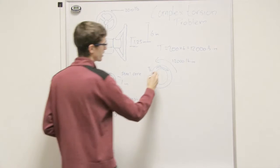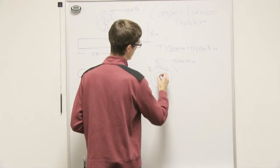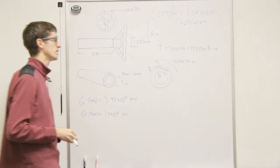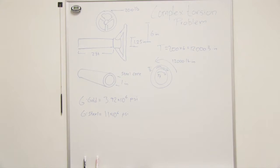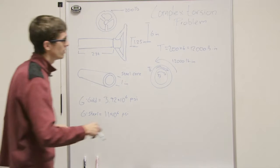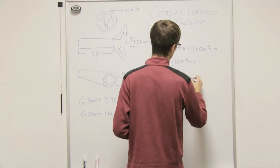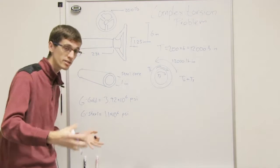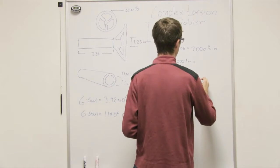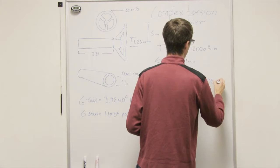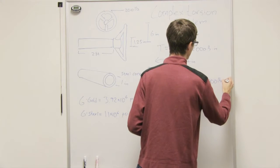And then we're going to have another torque right there, which we're going to call torque of steel. Now the whole torque is going to be equal to 1,200 pound inches, so we know the full torque has to resist that, and so that means we know that T of G plus T of S, the two torques from the two materials, has to be equal to the 1,200 pound inches.